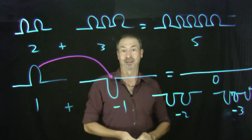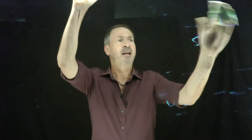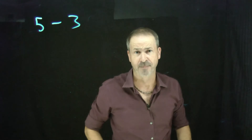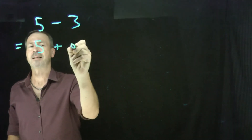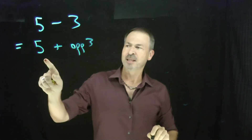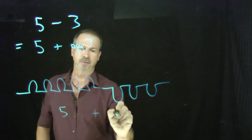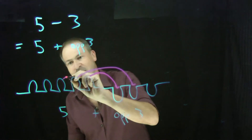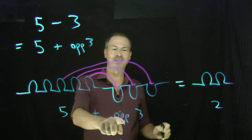But then something really curious happened in school. I was taught a new operation called subtraction — five take away three. I was being taught to think about having five objects and removing three, leaving two. But I thought: this is really still addition. Think of it as five plus the opposite of three. In my sandbox that's five piles plus three holes. I use the sand from each pile to fill up each hole, and I'm left with just two piles. Five plus the opposite of three is two.